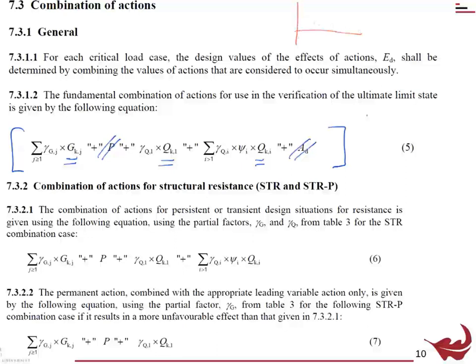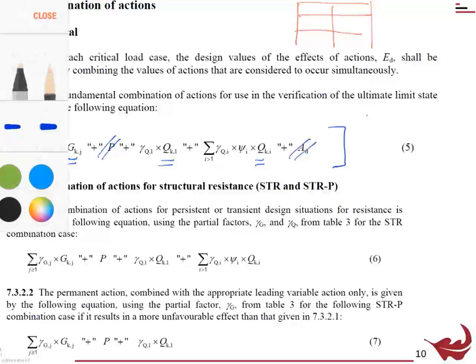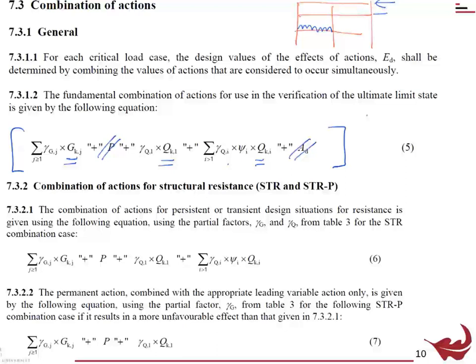Adding loads is a 'funny' term — you might have a load on the second floor beam and a wind load on the top floor blowing horizontally, and we're going to 'add' those together. That's why the addition sign uses inverted commas — it just means they're acting together, working on the building, being taken into account in an analysis. We're going to look at STR and STRP: STR is when imposed load governs structural resistance, and STRP is when the permanent load governs.